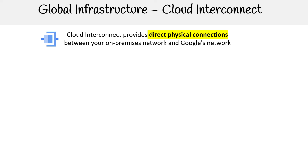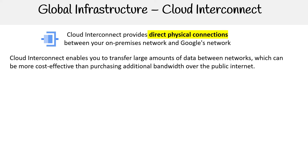Cloud interconnect provides direct physical connections between your on-premise network and Google's network. It enables you to transfer large amounts of data between networks, which can be more cost-effective than purchasing additional bandwidth over the public internet. It's a direct physical connection — fiber optics running from data center to data center.